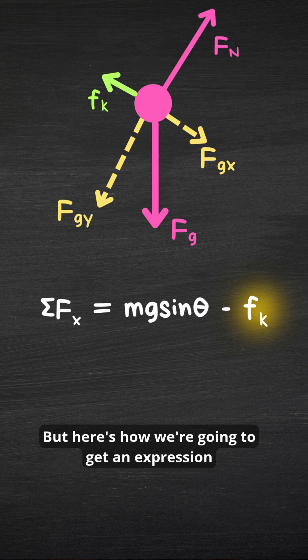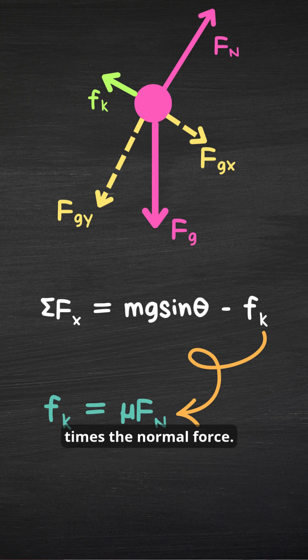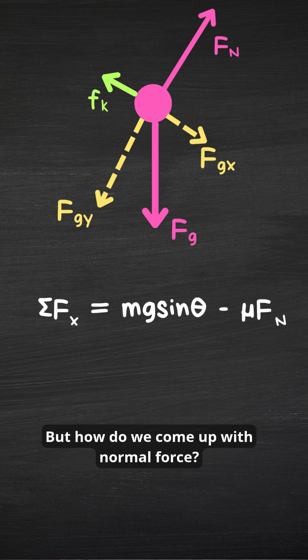But here's how we're going to get an expression also for friction. Because if you remember, friction comes from multiplying the coefficient of friction times the normal force. But how do we come up with normal force?